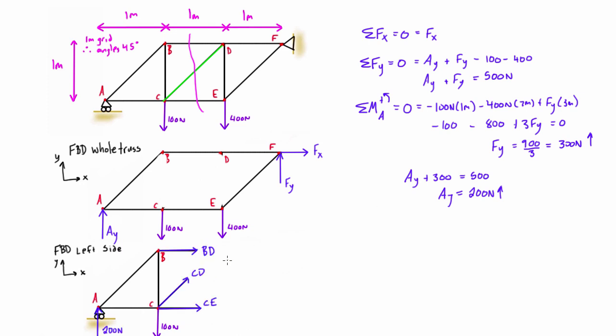Now that we've made our virtual cut, we've drawn all the internal forces in the members we've cut in tension. We always draw them in tension, and if we get a positive answer when we solve, we know we've correctly assumed tension. If we get a negative answer, we know it's actually in compression.